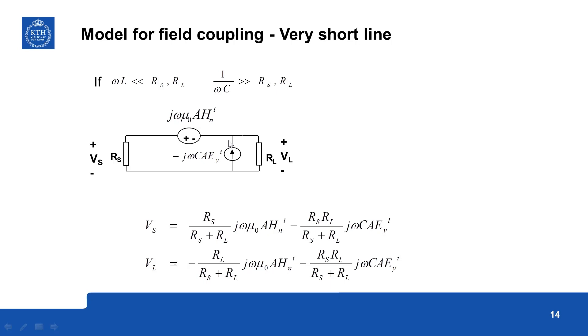Now from the other source where the current is divided across, current through this branch voltage is RL divided by Rs plus RL, then this source minus j omega C A EY multiplied by Rs to give this voltage, similarly on this side this will be negative and this will remain the same.